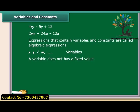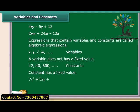On the other hand, a value that does not change is a constant. So in an equation, 7X squared plus 5XY plus 8, X and Y are the variables and 8 is a constant.